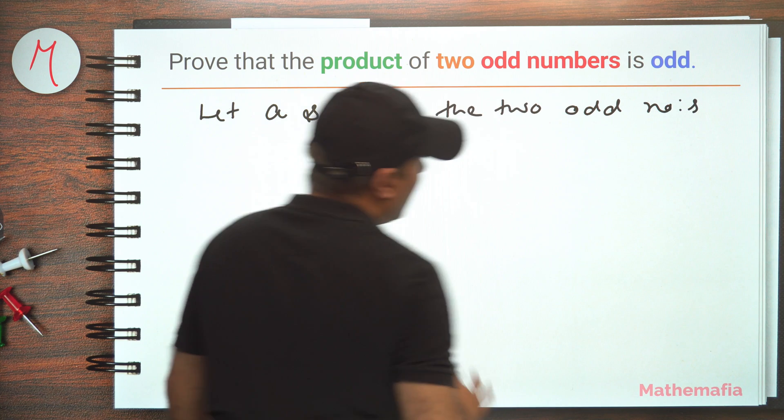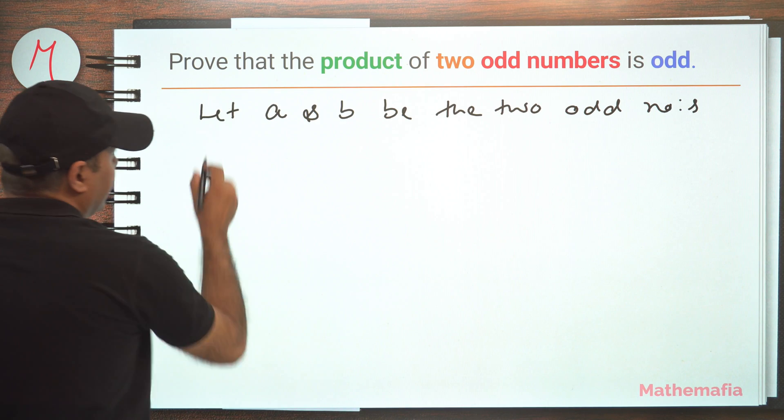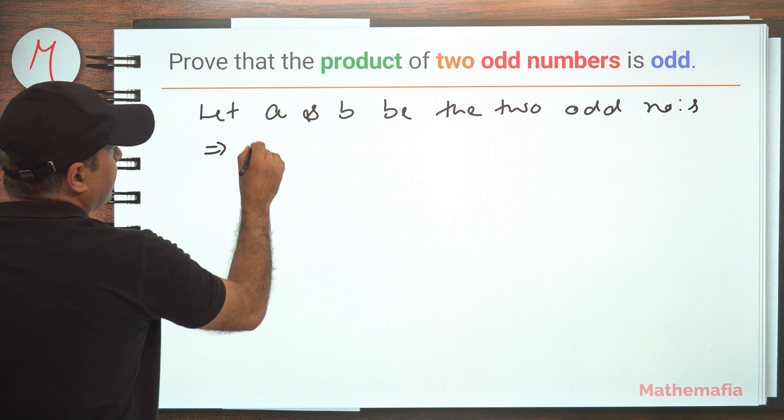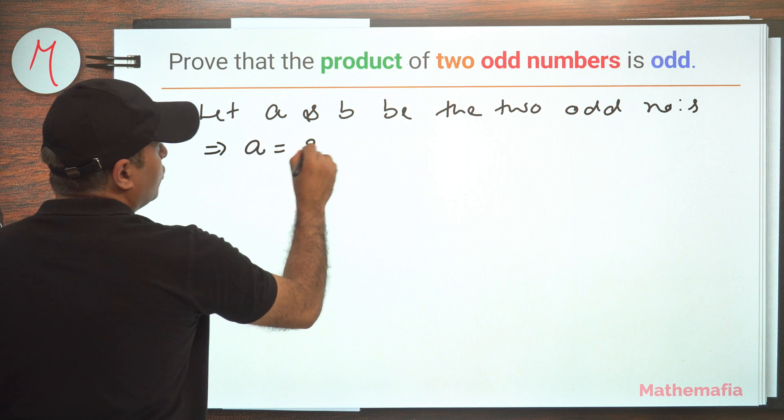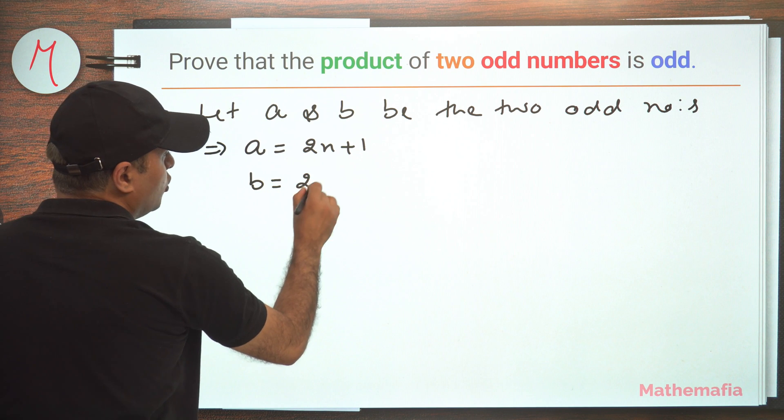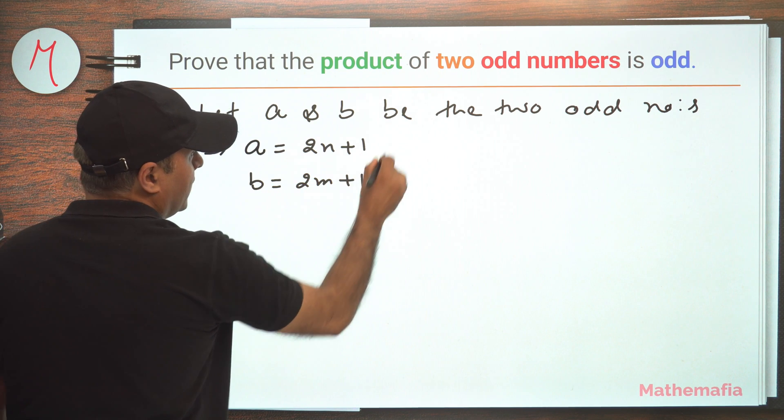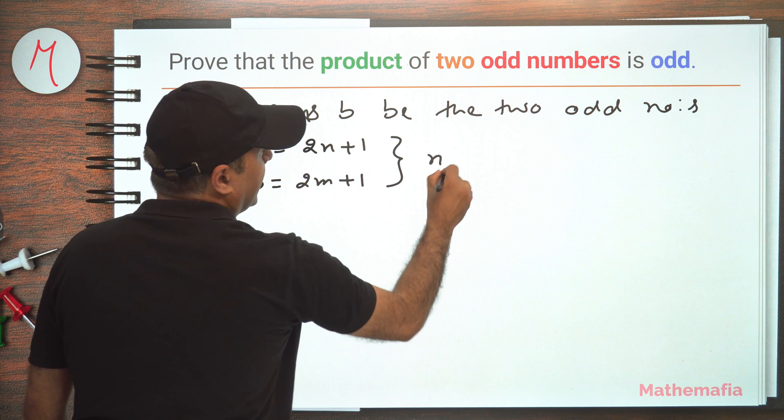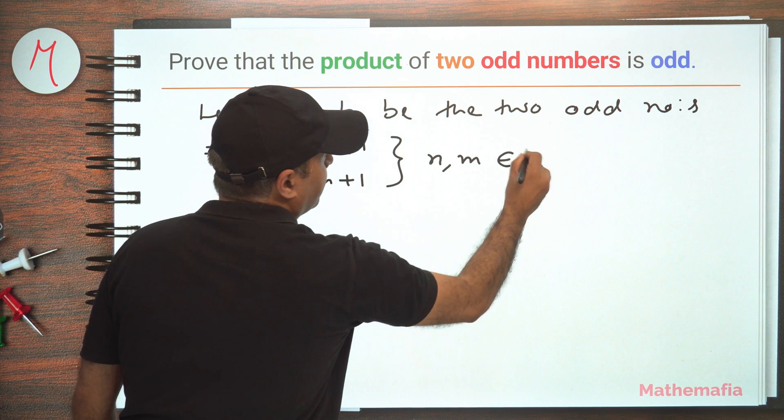So if a and b are two odd numbers, then definitely I can write a as 2n plus 1 and b can be written as 2m plus 1, where both n and m are integers.